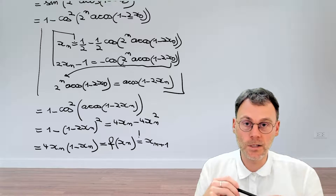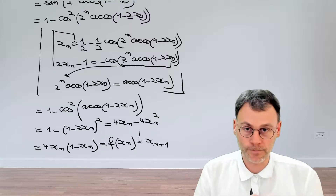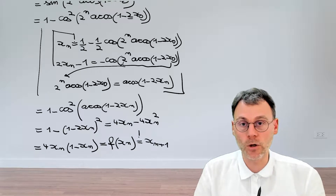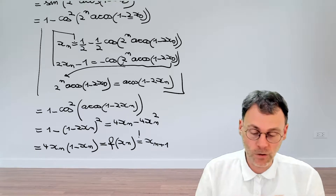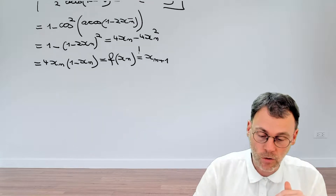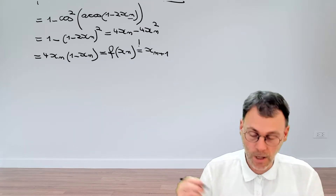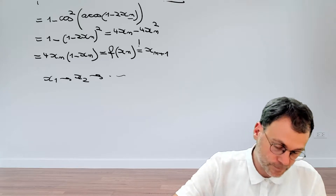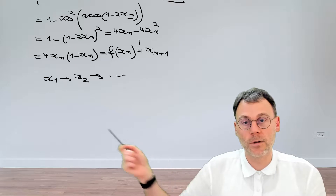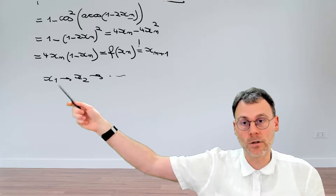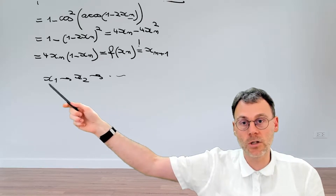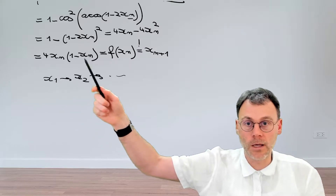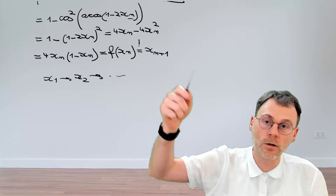There's another thing we can do with this exercise, which is more philosophical. You may remember that chaos basically means sensitivity to initial conditions. If you have a map and start from initial condition x₀, then keep applying the map, a small numerical rounding error will cause small deviations that keep growing and growing.